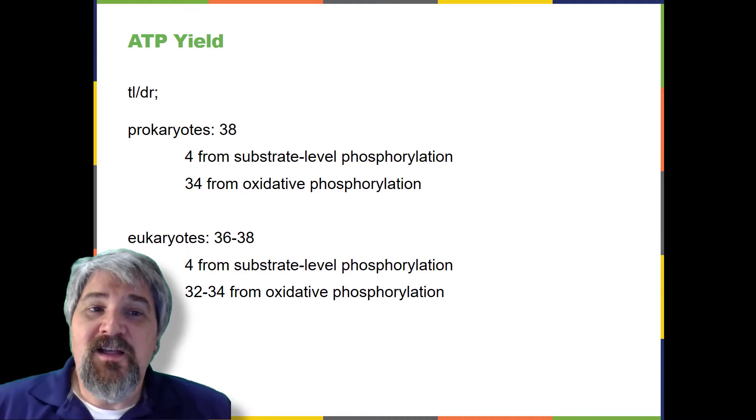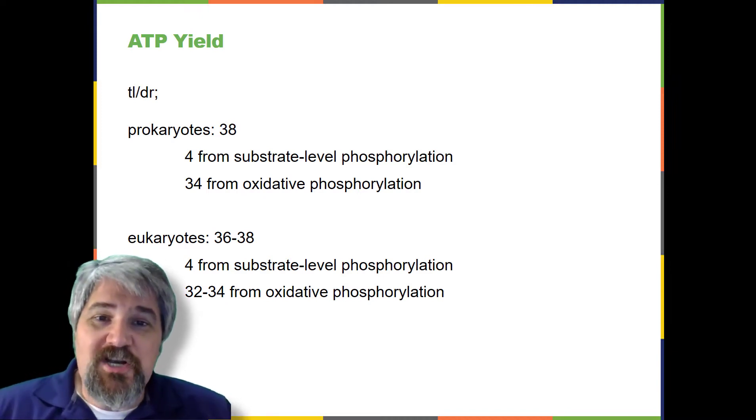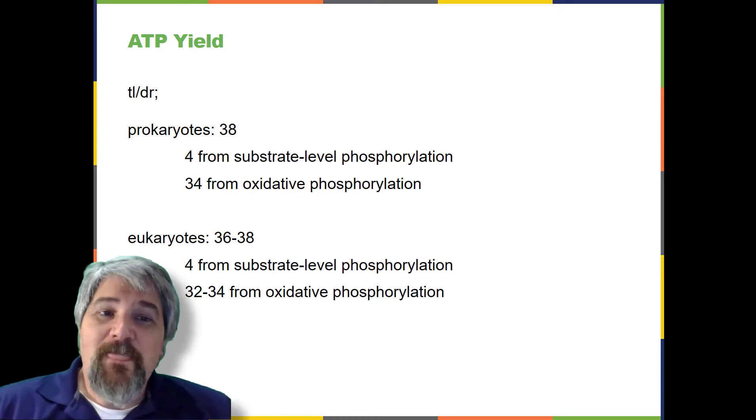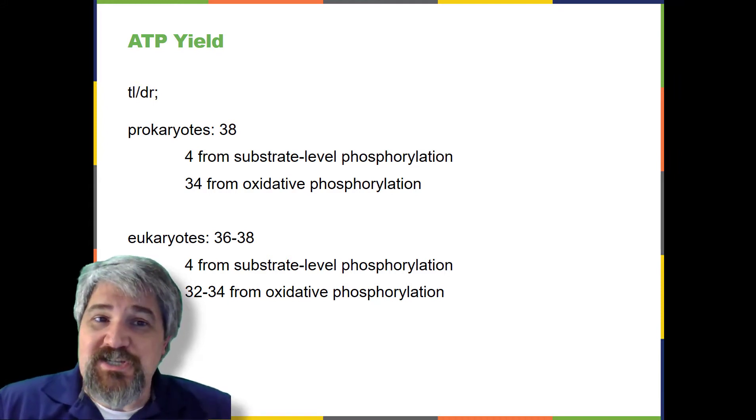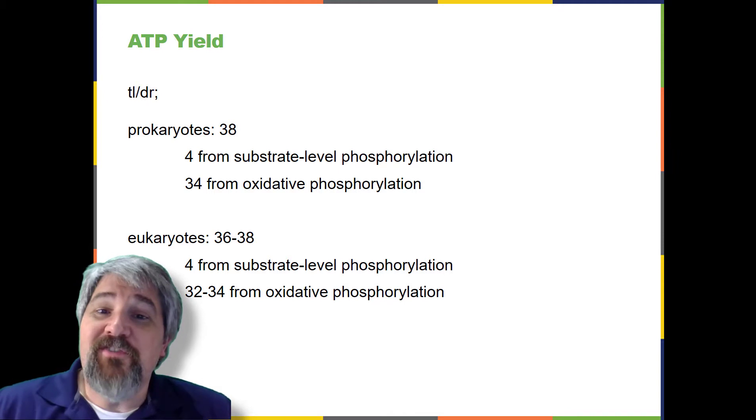ATP yield. The number of ATP molecules generated from the catabolism of glucose varies. For example, the number of hydrogen ions that the electron transport chain complexes can pump through the membrane varies between species. Another source of variance stems from the shuttle of electrons across the mitochondrial membrane.